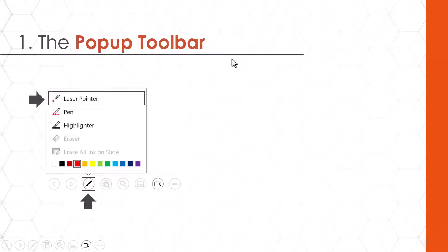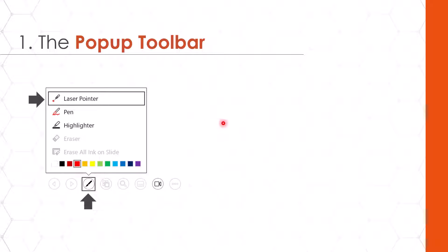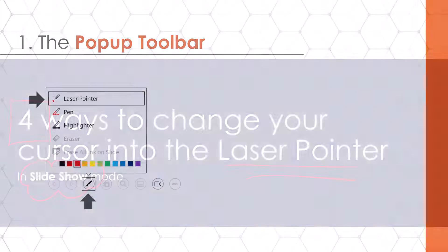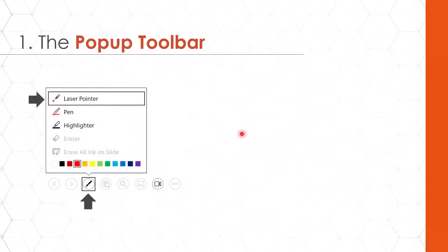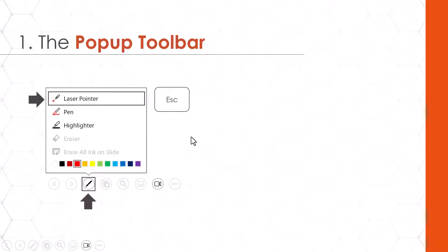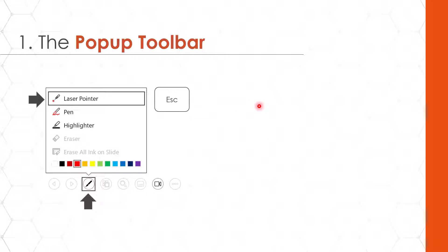The first way to change your mouse cursor into the laser pointer is to use the pop-up toolbar, which you'll find in the lower left-hand corner in slideshow mode. If I click this little pen icon, notice there is a laser pointer option. Selecting it, my mouse cursor becomes the default red laser pointer. I don't have to hold anything down on my keyboard, and the laser pointer stays locked into place across slides until I hit the escape key, at which point my laser pointer becomes my normal mouse cursor again.